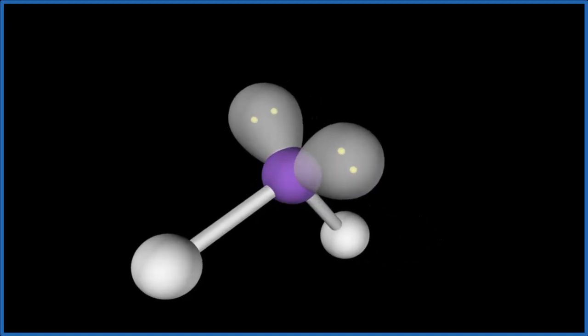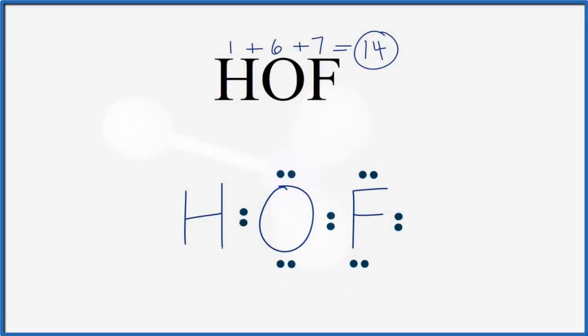Let's go back to our Lewis structure. So this is our Lewis structure for HOF. Note that we have that bent molecular geometry because of these two lone pairs here pushing the hydrogen and the fluorine down. You could also write it like this. And here we're showing that bent molecular geometry. This is in the gas phase. So this is HOF as a gas where we do have that 97.2 bond angle between the hydrogen and the fluorine.